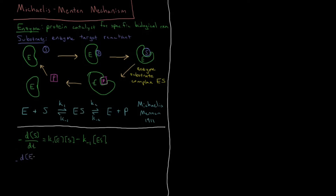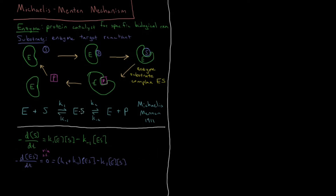We apply the steady-state approximation: minus d[ES]/dt equals 0. That change in concentration is zero due to the steady-state approximation. So that equals K2 plus K-1 times the enzyme-substrate concentration — it gets consumed both going forward via K2 and backward via K-1. It gets produced from K1 times [E] times [S], and also produced from K-2. So we have minus K-2 times [E] times [P]. Those are all the mechanisms that consume and produce the enzyme-substrate complex.